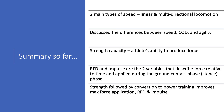Here's a summary of what we've covered so far. There are two main types of speed: linear and multi-directional locomotion. We discussed the differences between speed, change of direction, and agility. We defined strength capacity as the athlete's ability to produce force, and talked about rate of force development and impulse, as well as the type of training to maximize the application of force.